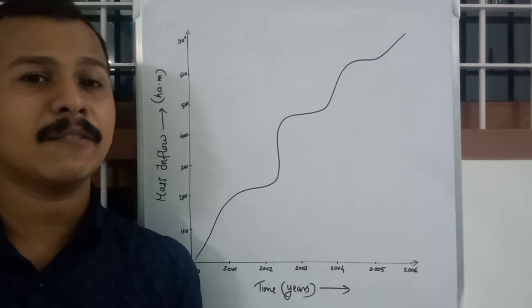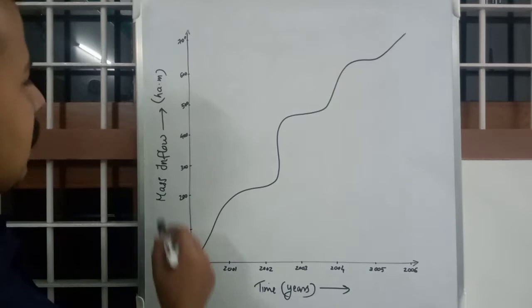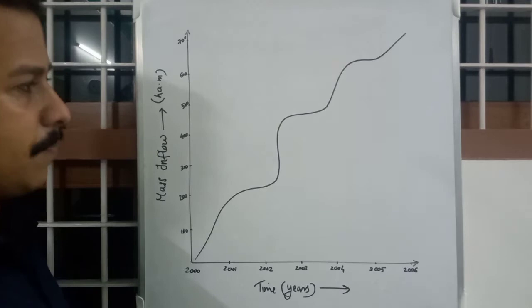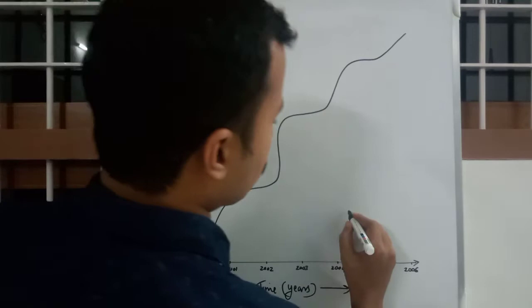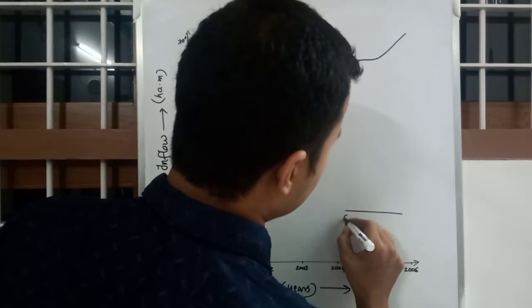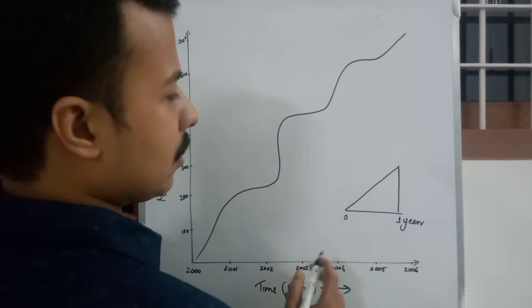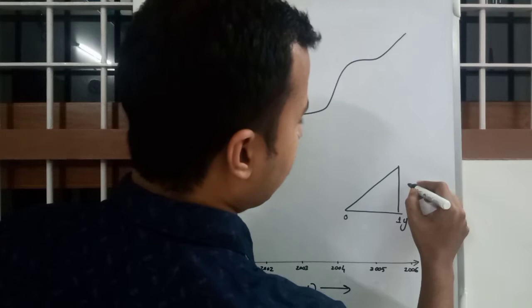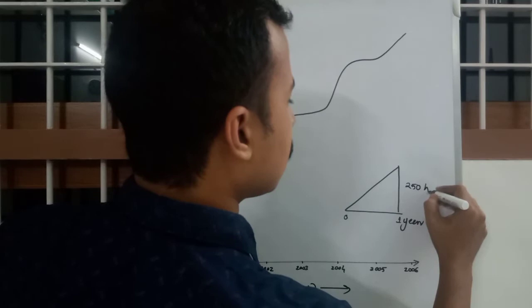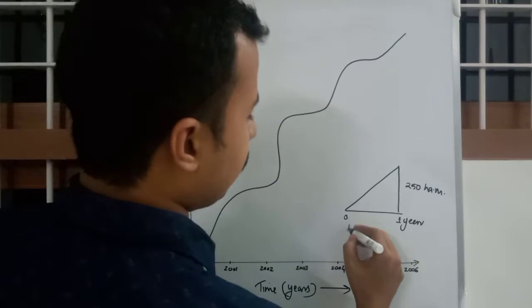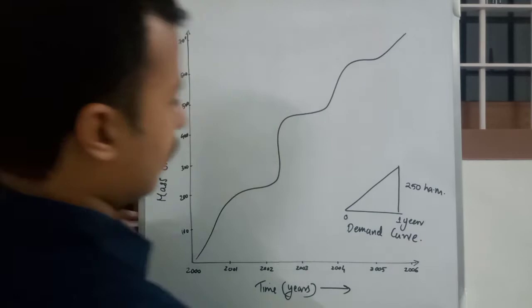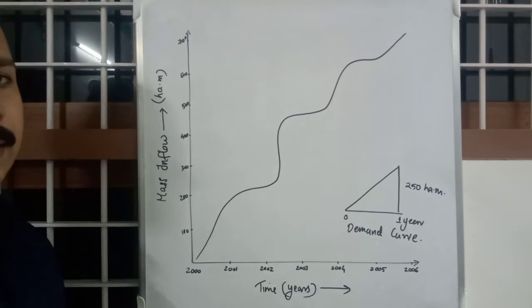Today our topic is calculation of storage capacity of a reservoir using a mass inflow curve. We have a mass inflow curve with mass inflow on the y-axis and time in years on the x-axis. In addition to the mass inflow curve, we need a demand curve. Suppose this is a uniform demand for one year of 250 hectare meters. This bigger one is the mass inflow curve.